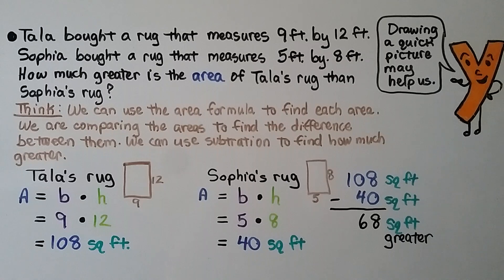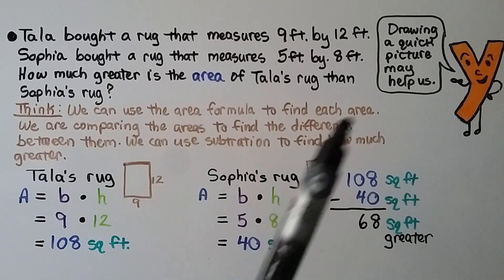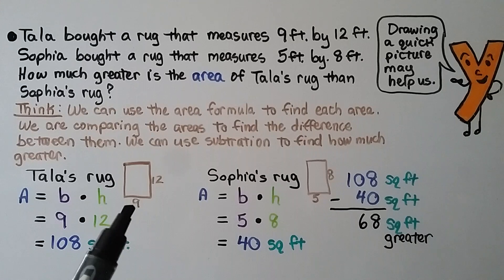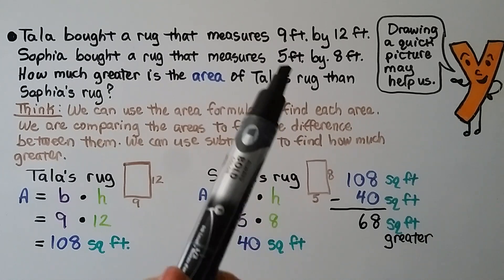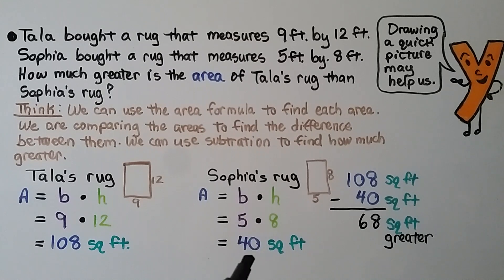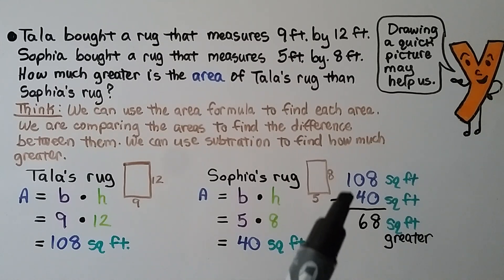Tala bought a rug measuring 9 feet by 12 feet. Sofia bought a rug measuring 5 feet by 8 feet. How much greater is the area of Tala's rug than Sofia's? We use the area formula for each, then subtract. Tala's rug: 9 times 12 equals 108 square feet. Sofia's rug: 5 times 8 equals 40 square feet. 108 minus 40 equals 68 square feet — Tala's rug is 68 square feet greater.